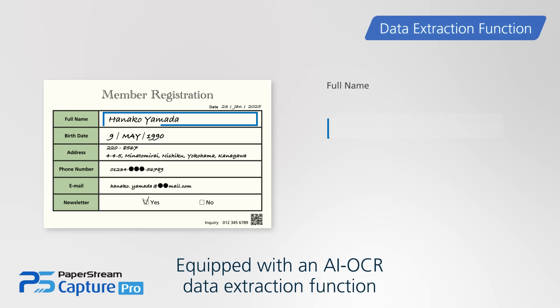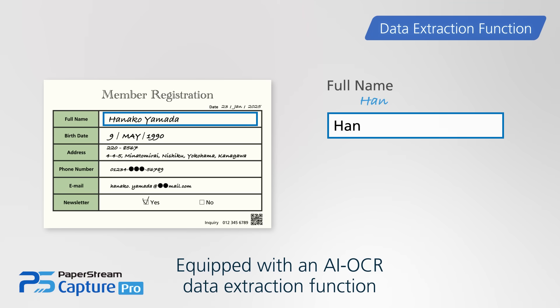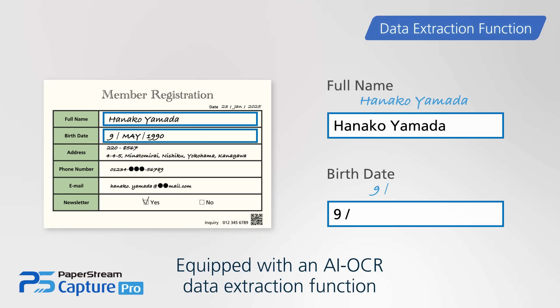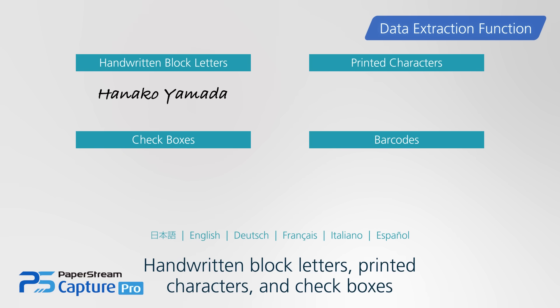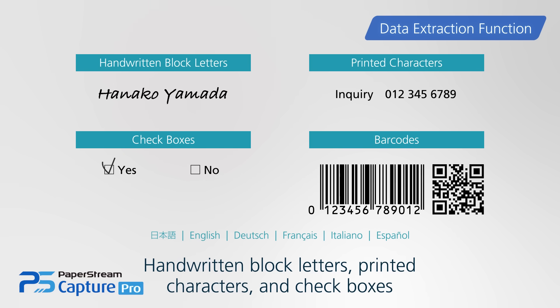The incorporation of AI OCR supports data extraction from a variety of sources, including handwritten block letters, printed characters, and checkboxes across six languages.